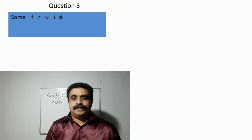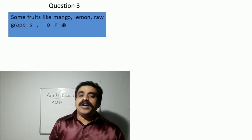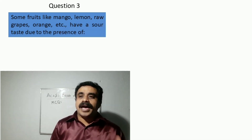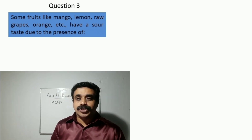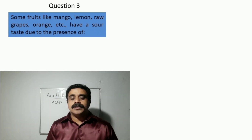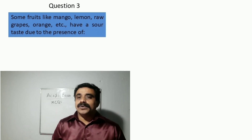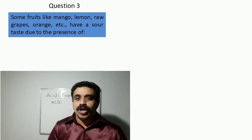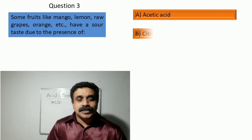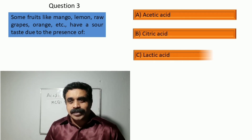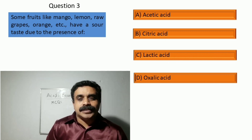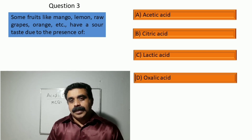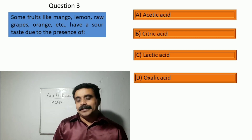Question number three: some fruits like mango, lemon, raw grapes etc. have a sour taste due to the presence of — option A: acetic acid, option B: citric acid, option C: lactic acid, option D: oxalic acid. The correct answer is option B, citric acid.